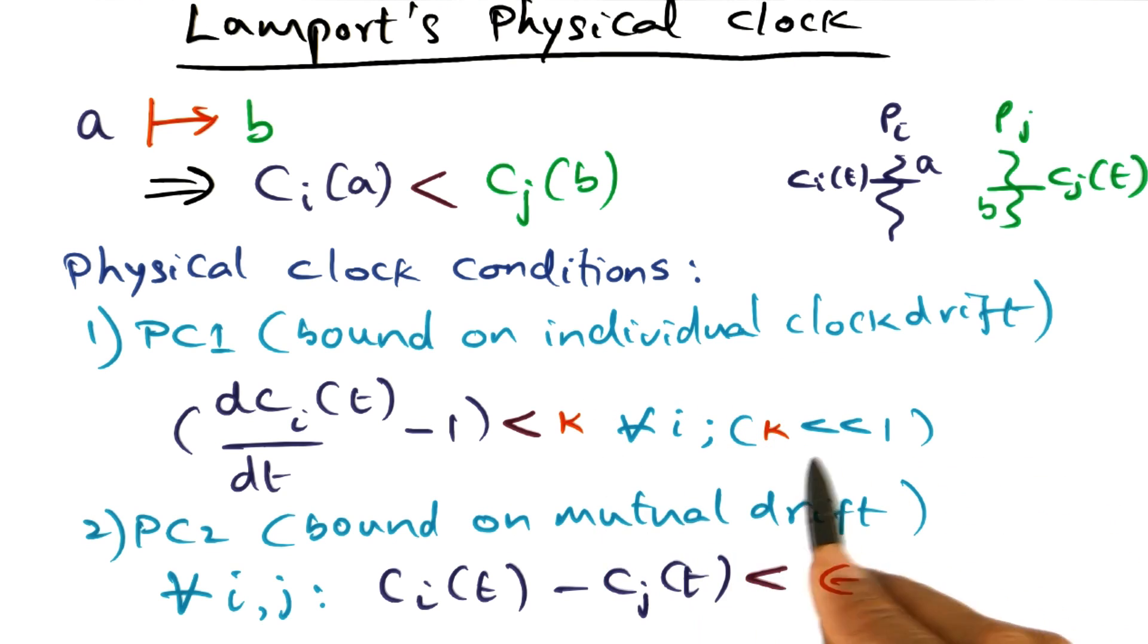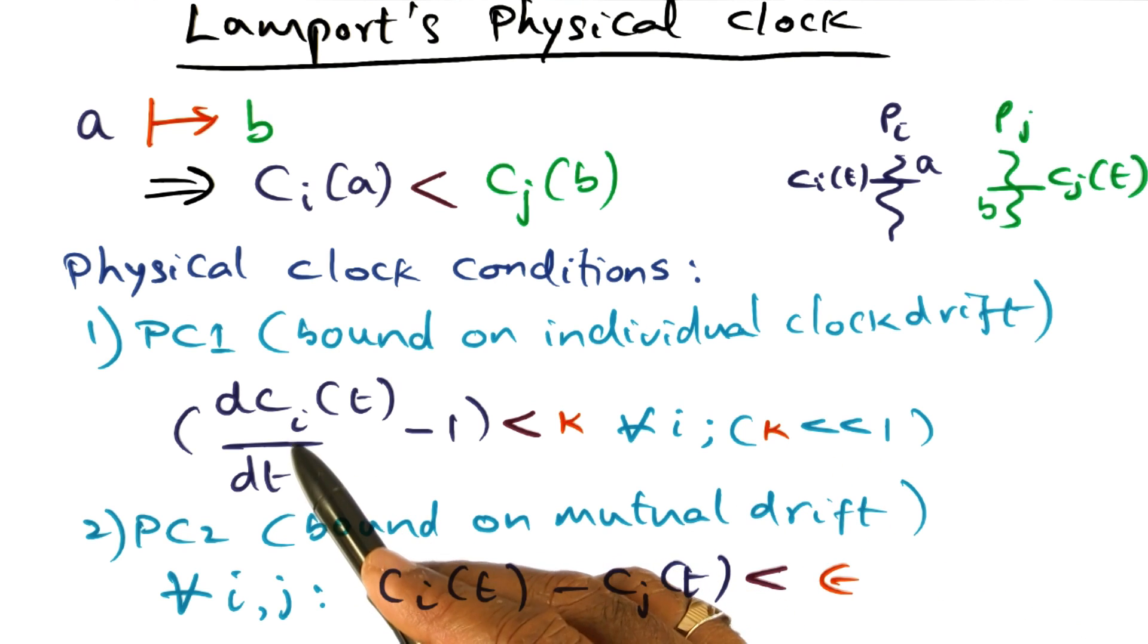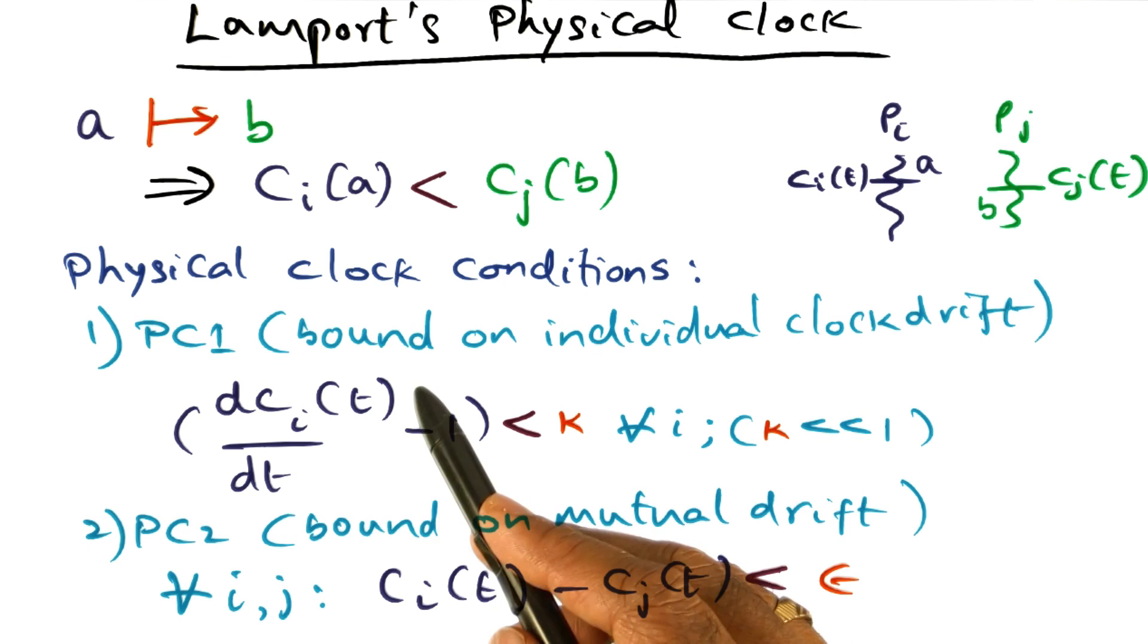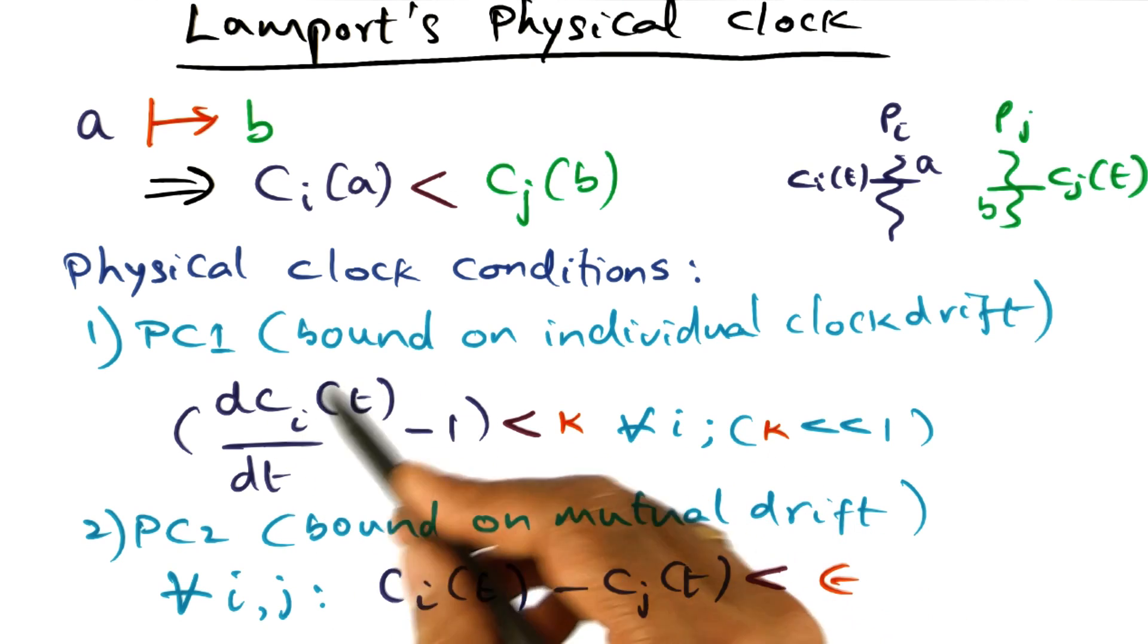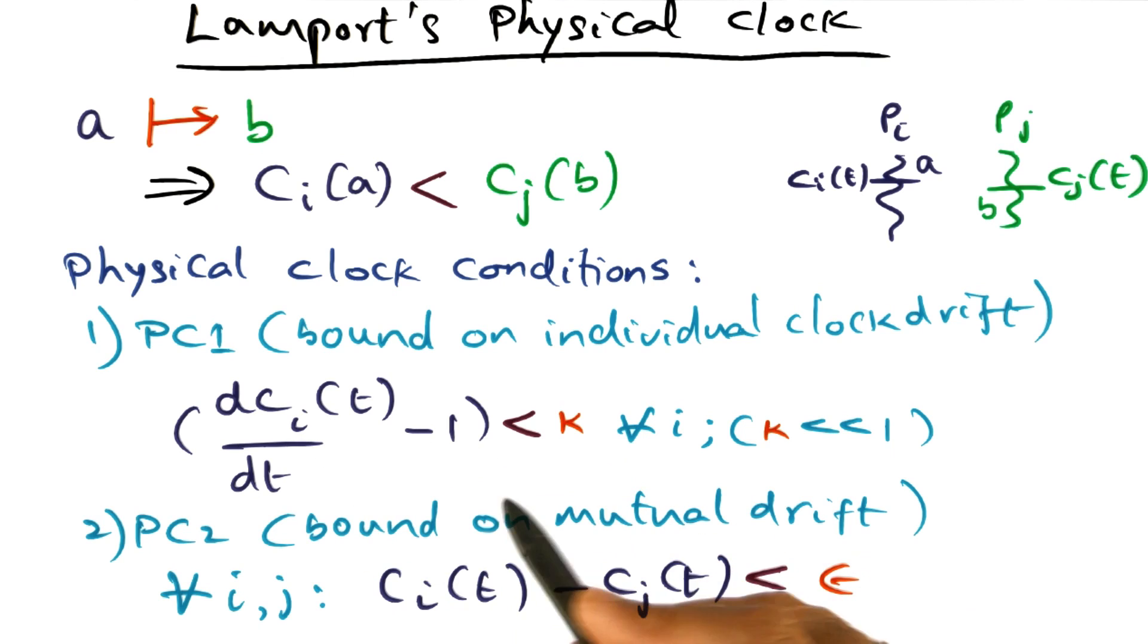So k is the individual clock drift, and we are hoping that it is very, very small. And you can see that if ci of t is equal to t, then dci of dt should be equal to 1, and therefore this will be a 0. So, the left hand side of this will be a 0. And so that's why we are saying that k has to be a very small number.